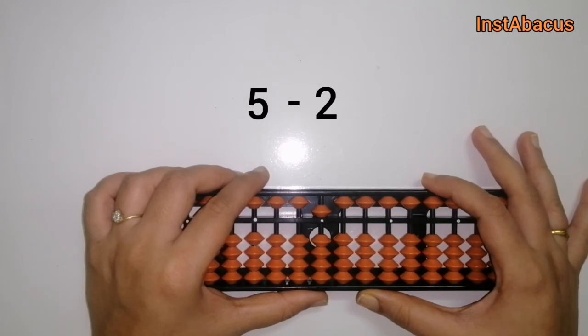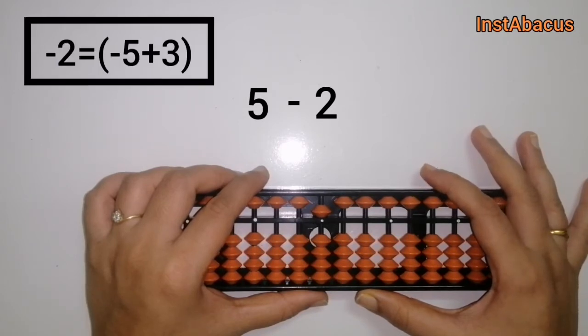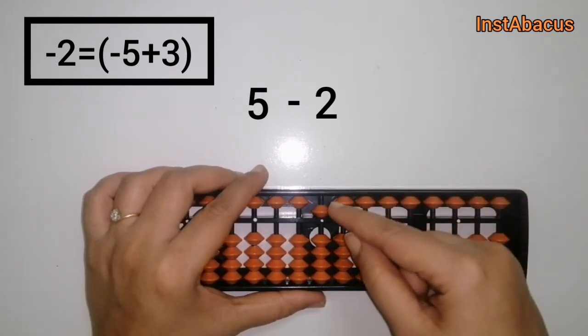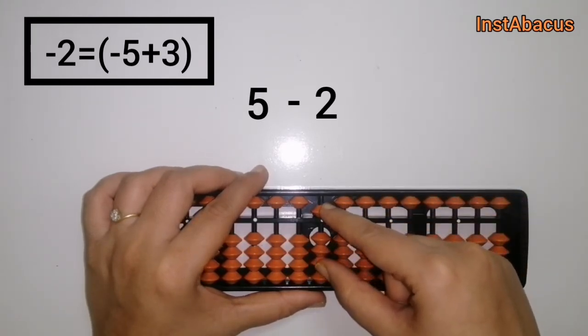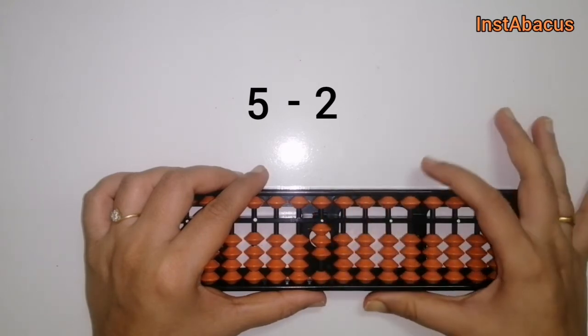We are going to ask the help of our small friend. We are going to subtract 2 in the form of minus 5 plus 3, because minus 2 is equal to minus 5 plus 3. So let's do it: minus 5, plus 3, there we go.